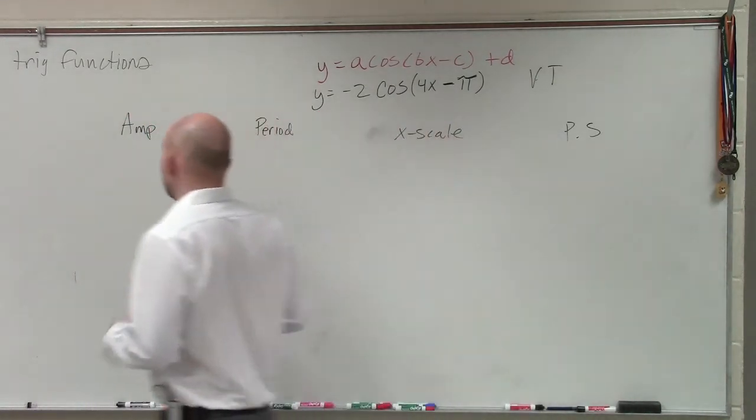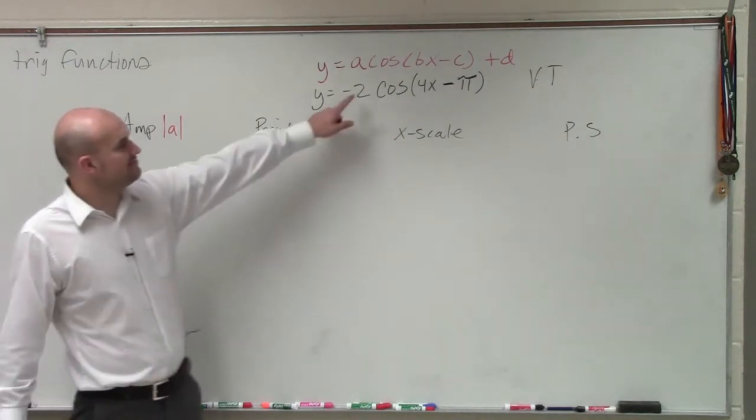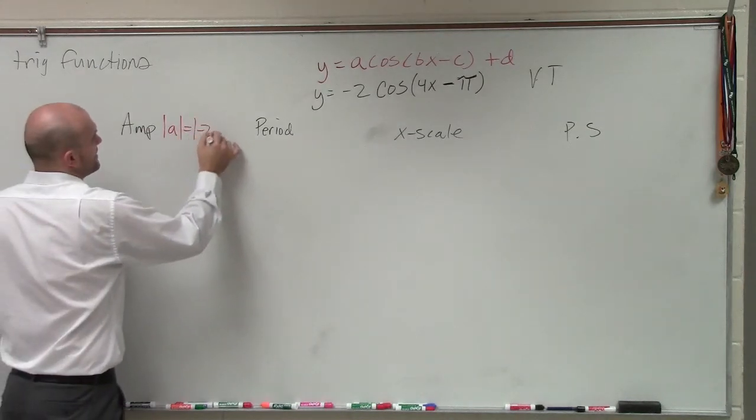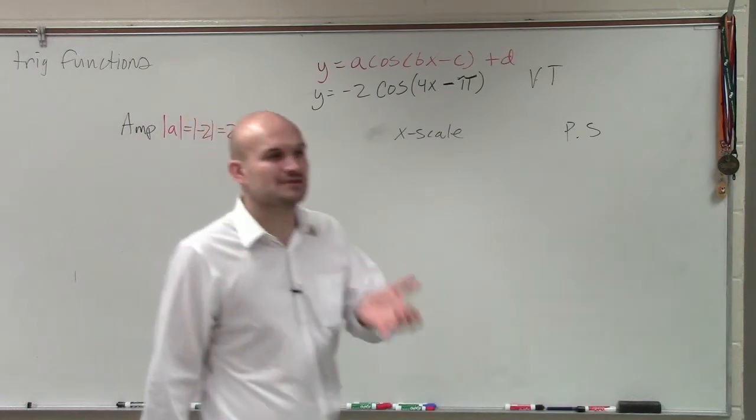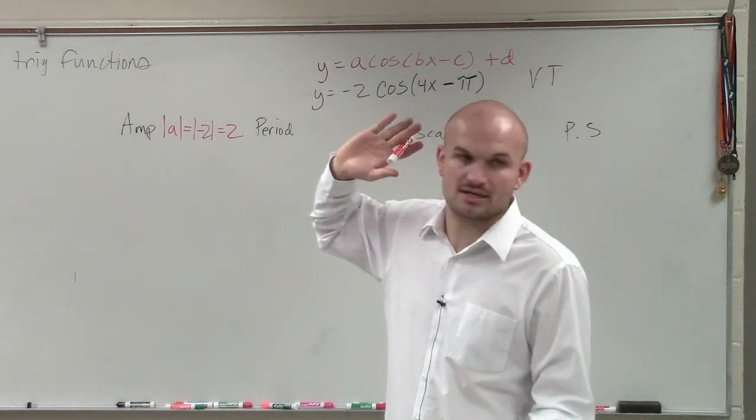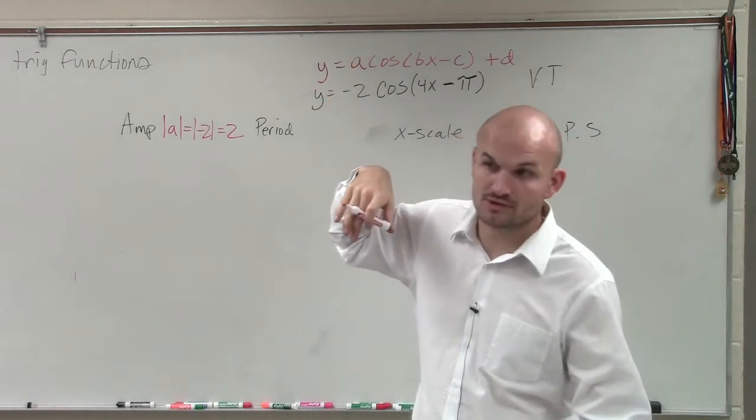So a, amplitude, absolute value of a. Well, what is our value that's being multiplied by cosine? Negative 2. Absolute value of negative 2, ladies and gentlemen, we should know is 2. So our amplitude is 2. That means that's the half distance of the highest to the lowest of our graph. That means our graph can only go as high as 2 and only go as low as negative 2.